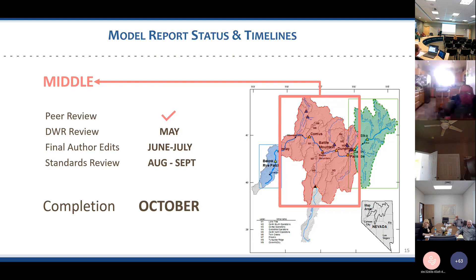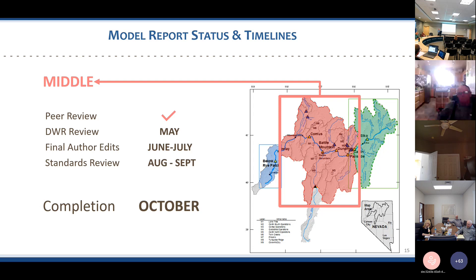The middle model is the most complex section — it's the largest geographic area with the greatest amount of groundwater pumping and mines within the region. It has multiple gauging stations including Carlin, Palisade, Beowawe, Battle Mountain, Comus, and Imlay. This one has undergone peer review, comments are being addressed, and USGS expects to deliver the report to us toward the end of April. We expect completion for public release in October.